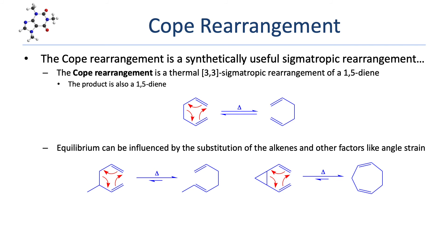Here we see two examples that demonstrate a simple analysis of reaction equilibria in Cope rearrangements. In the first example, the two alkenes in the reactant are both monosubstituted. In the product, one alkene is monosubstituted and the other is now disubstituted. Since alkenes are more stable when more highly substituted, the increased substitution on the lower alkene makes the product more stable and pushes equilibrium to the right. In the second example, the reactant has a highly strained 3-atom ring. The angle strain is relieved in the product, which is now a rather stable 7-atom ring, again pushing equilibrium to the right.